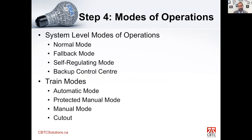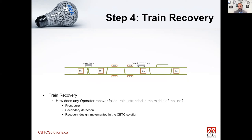Modes of operation must be defined — at the system level: normal mode, fallback mode, self-regulating mode, backup control center; and at the train level: automatic mode, protected manual mode, manual mode, and cutout mode. Train recovery must also be addressed — how do you recover a failed train that has lost communication? Options include procedures, secondary train detection, or a designed recovery feature. If you can figure out how to recover a failed train, you can handle just about any failure the system may exhibit.